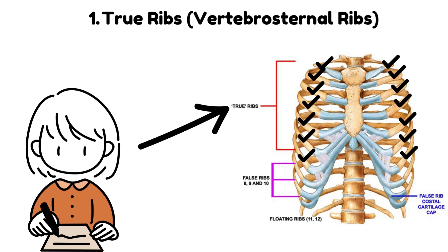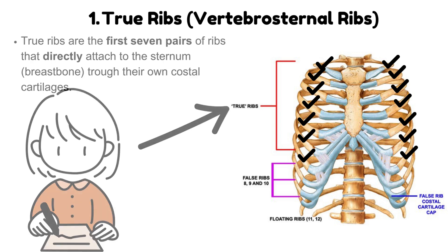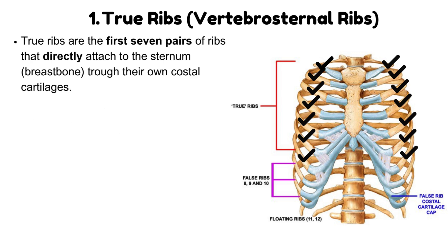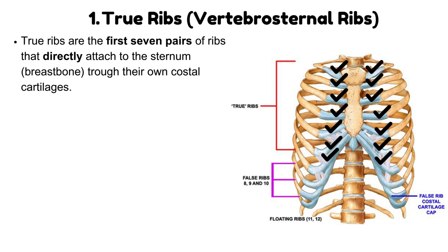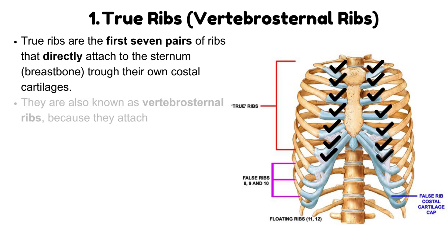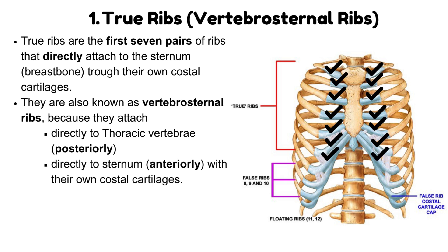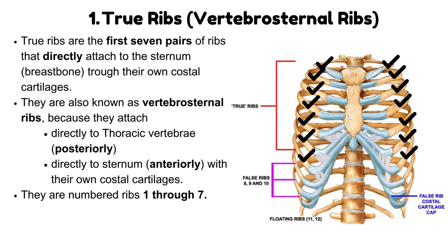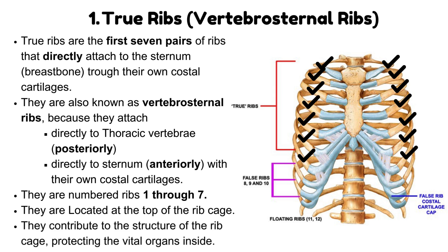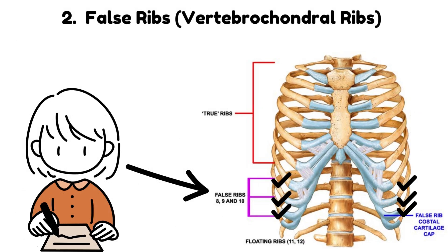True ribs — vertebrosternal ribs. True ribs are the first seven pairs of ribs that directly attach to the sternum through their own costal cartilages. They are also known as vertebrosternal ribs because they attach directly to the thoracic vertebrae posteriorly and directly to the sternum anteriorly with their own costal cartilages. Numbered ribs 1 through 7, they are located at the top of the rib cage and contribute to its structure, protecting the vital organs inside.